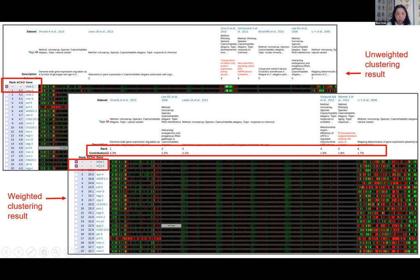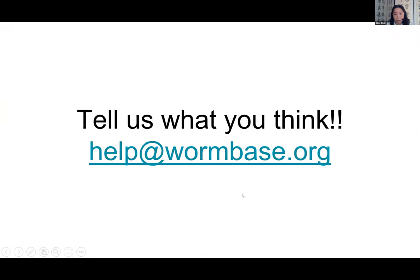When you enter two genes, they serve as a positive control. SPELL evaluates every dataset to see how well OMA-1 and OMA-2 correlate within it, giving higher weight to datasets where their correlation is highest. Poor quality datasets with lower correlation get less weight, and very bad ones may be eliminated. If you enter two genes like OMA-1 and OMA-2, the result is slightly different from a single-gene search because SPELL has weighted the datasets — this is the weighted clustering result in SPELL.